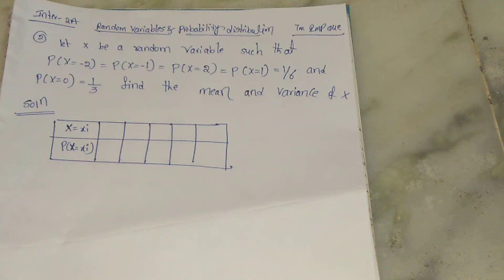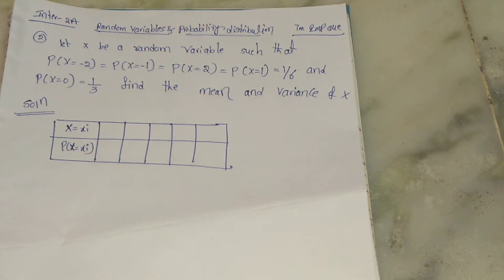Hi friends, welcome to PSR Studies. Today's class is Inter Secondary, yellow — 10th chapter: Random Variables and Probability Distribution. We'll look at a 7-marks important question.